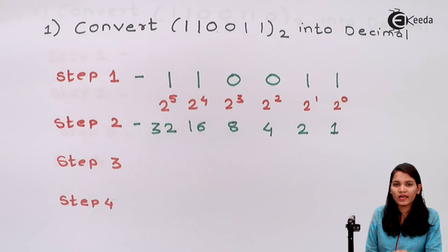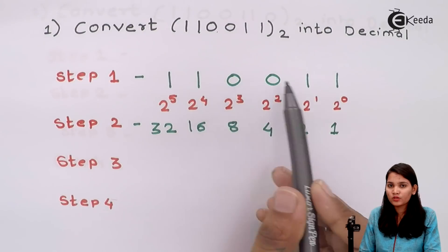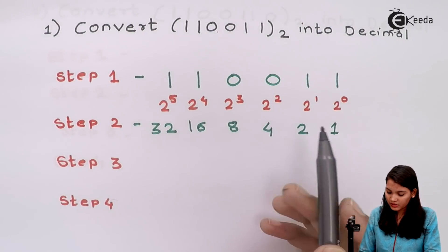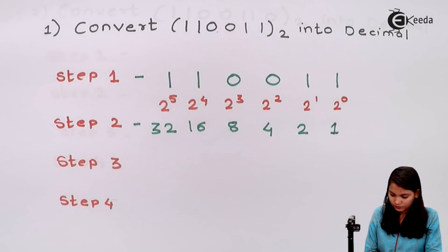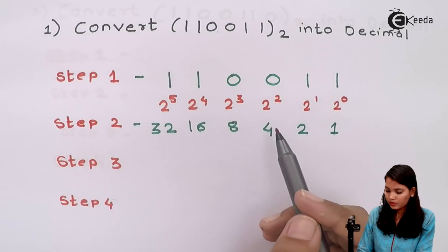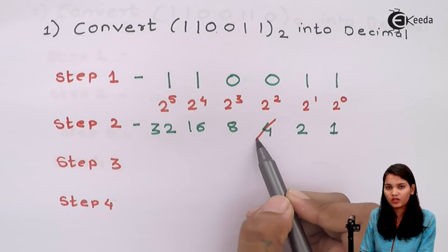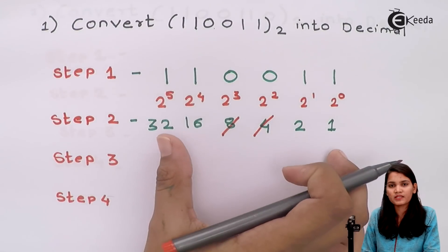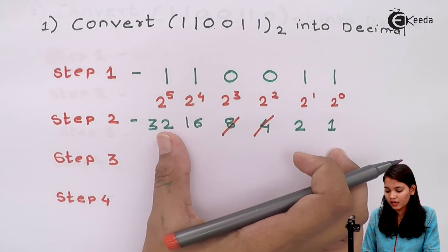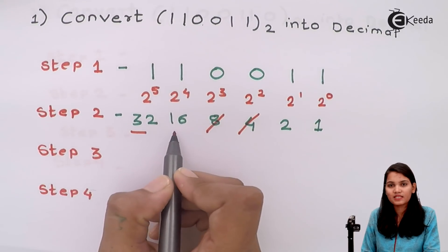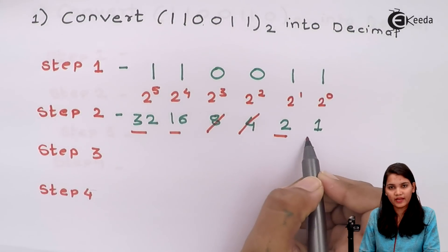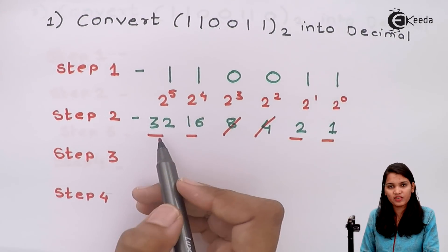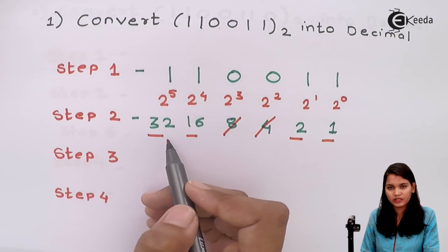The next step is to cancel out the weightage values placed below 0 bits. There are two 0s in the number, so we cancel out weightage 4 and weightage 8. The remaining weightage values are 32, 16, 2, and 1.